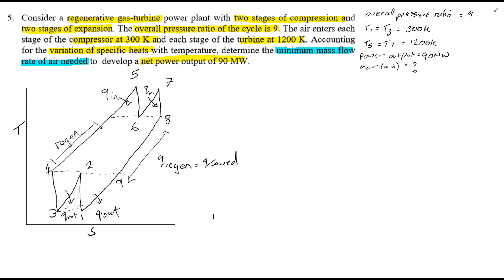We're interested in finding the minimum air flow that we need to provide a power output of 90 megawatts. Interestingly, it also states that we need to account for variable specific heats, so you'll be aware that you need to use the tables in order to solve this problem.